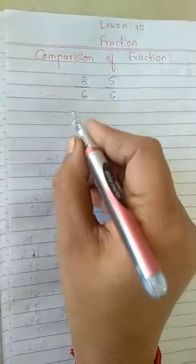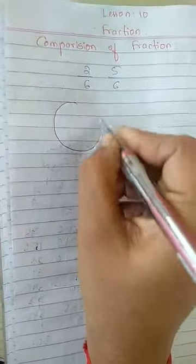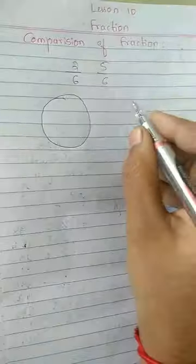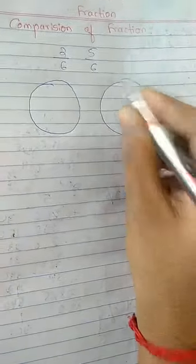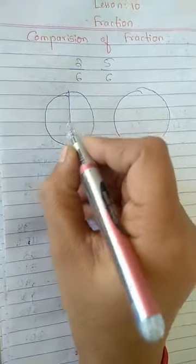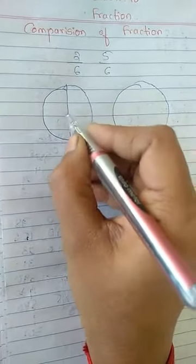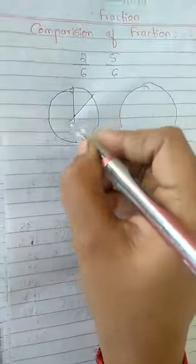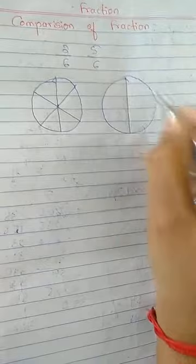So for that what I will do, I will draw, I will take one circle, here also one circle I will take because we have to compare. So we need 2. In this I am going to do how many parts? 6 parts I am going to do. 6 equal parts I am going to do in both the figures.